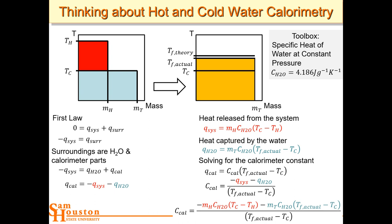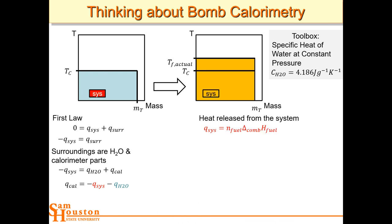We'll solve for the calorimeter constant three times each next week using a Raspberry Pi temperature measurement system, working in pairs with six total runs. You'll calculate the average calorimeter constant and standard deviation to analyze whether it depends on total water volume. Once the calorimeter constant is known, it can be used for unknown reactions: a system releases heat into the water bath, the temperature changes, and the first law plus the known calorimeter constant tells you the heat generated.